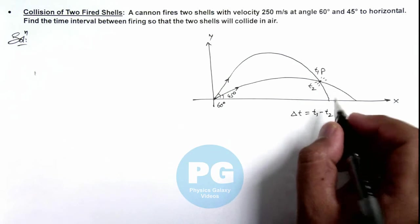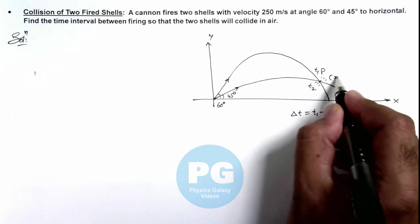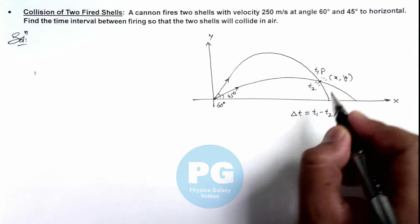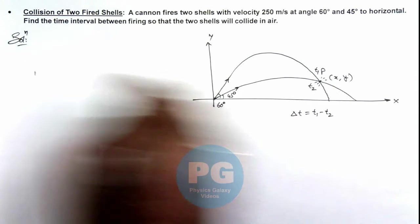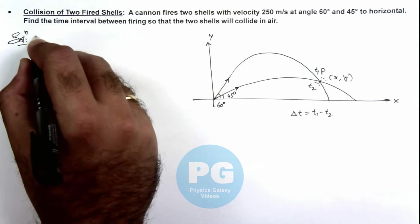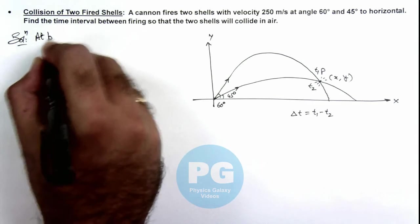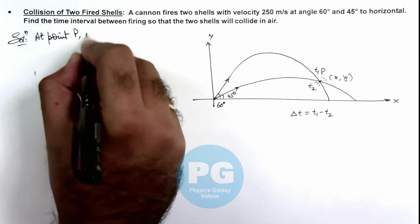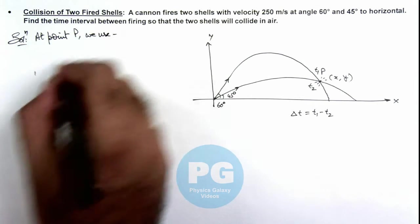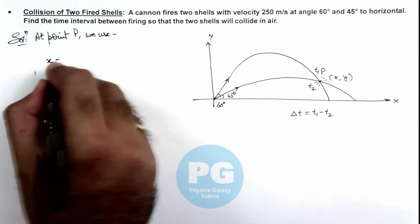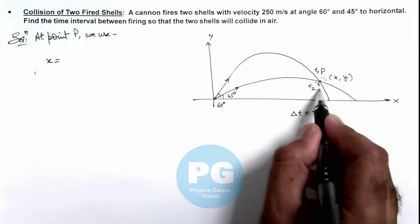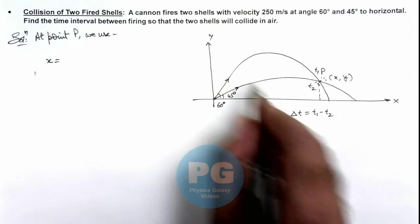Now if the coordinates of point P are (x, y), then in this situation we can use at point P, the value of x is the distance traveled in horizontal direction by the two particles.